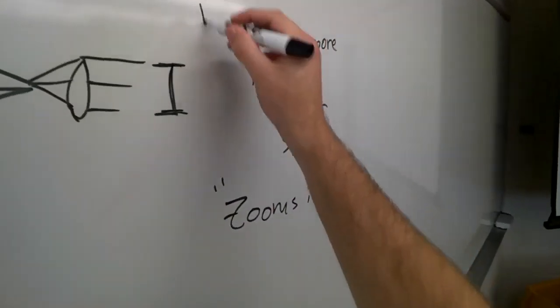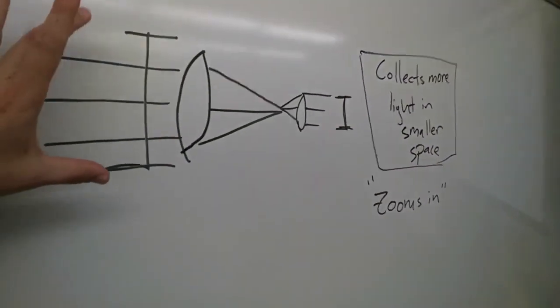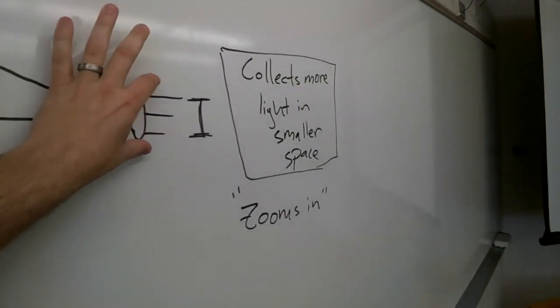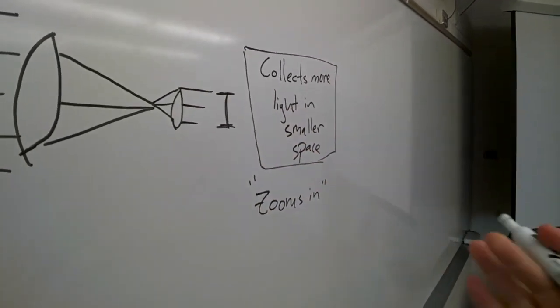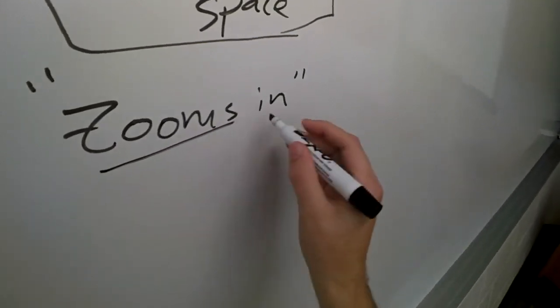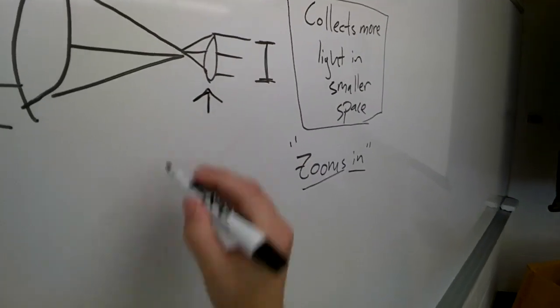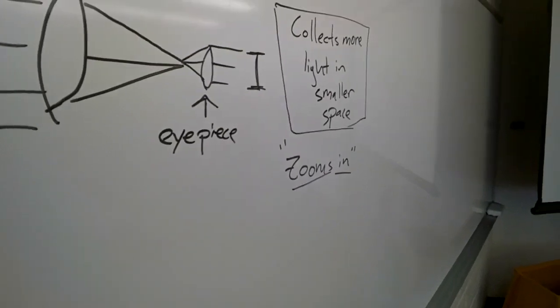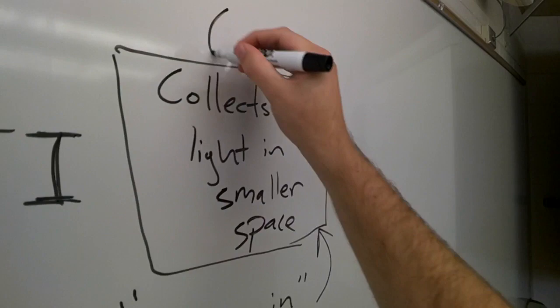More light in smaller space. That's really the most important thing that a telescope does for us. The other thing it does is it sort of zooms in, makes things look bigger. But by far, this is the most important thing. It takes all the light over a really big area, because everything in space is really faint, and it shrinks it down to a much smaller area, concentrates that light so we can see deeper and further objects.